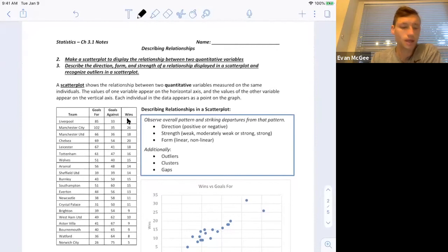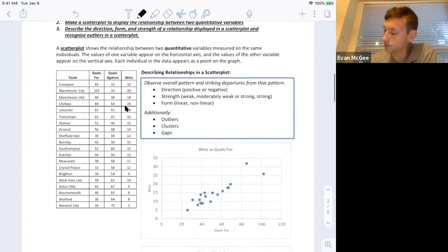So to make a scatter plot, the first thing we have to make sure we're aware of is scatter plots can only show two quantitative variables. Fortunately, I only have quantitative variables here, so I can make a scatter plot and I have to pick what my explanatory or my response variables are going to be.